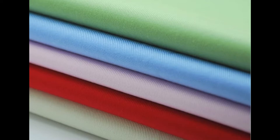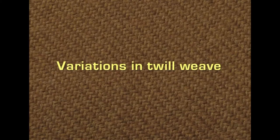Twill weave is valued for its strength, firmness, and drapeability. Variations in twill weave can be achieved by changing the prominence of the wales, the direction of the diagonal line, and the number of yarns used. To make wales more prominent, thicker or carded yarns can be used; for finer wales, combed yarns or ply yarns can be used.